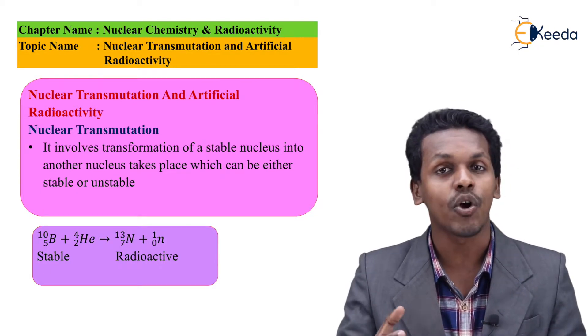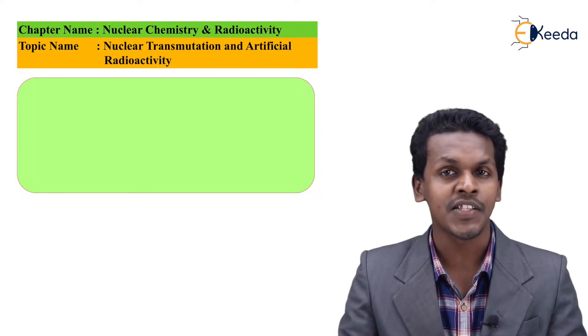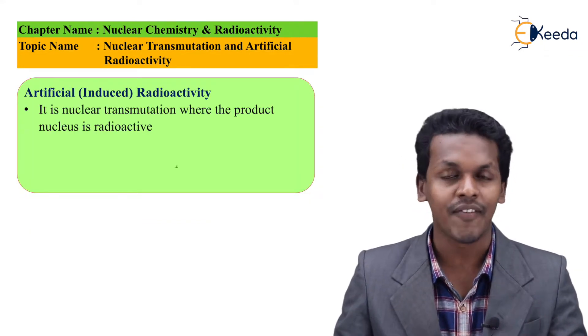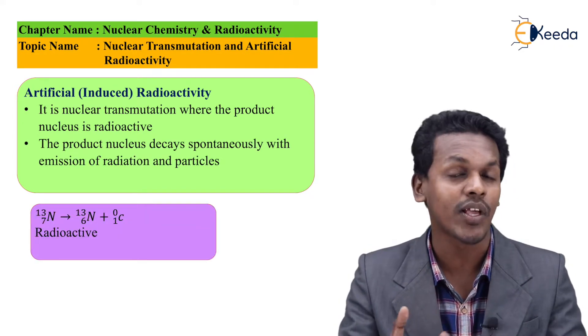The rest of the mass is removed as a neutron. This unstable nitrogen isotope (¹³N) acts as a radioisotope.